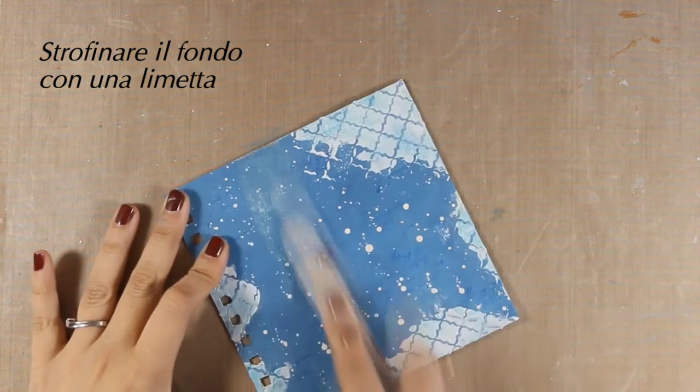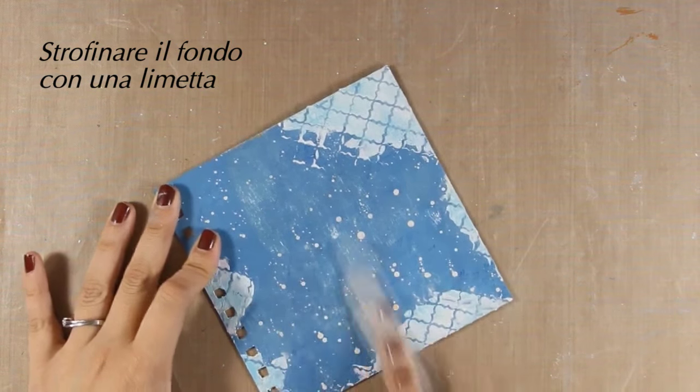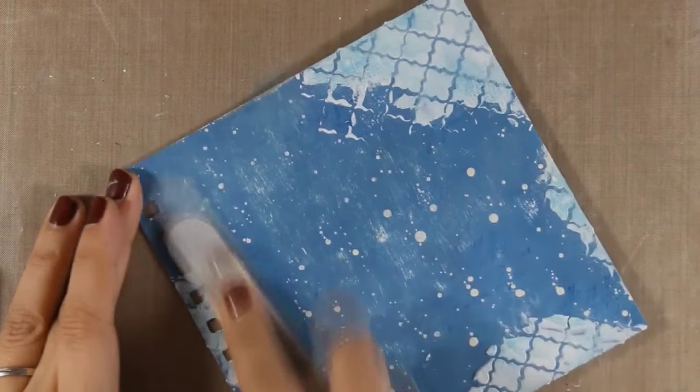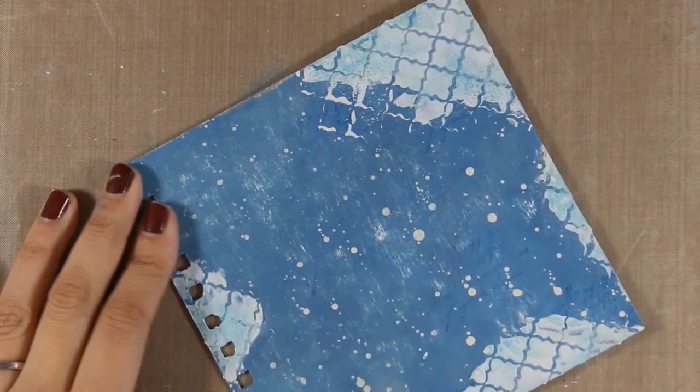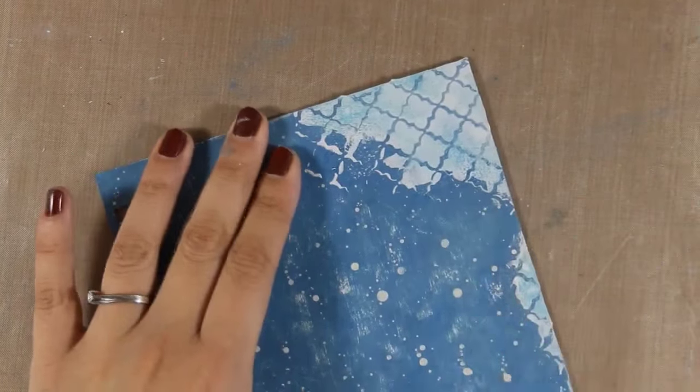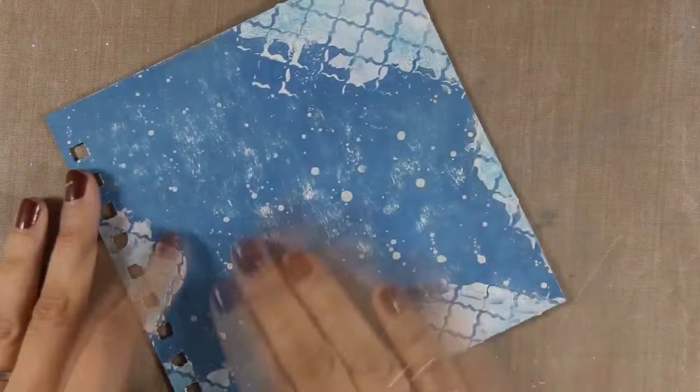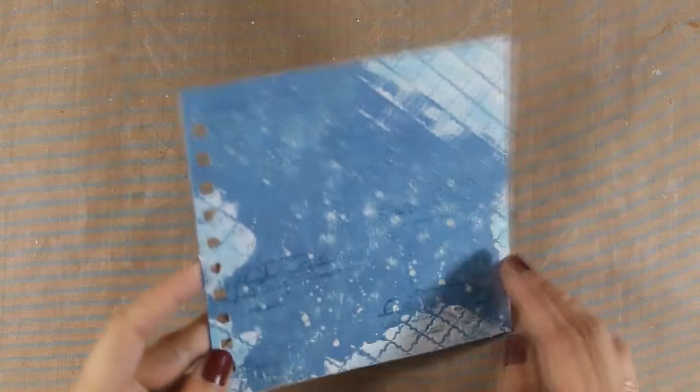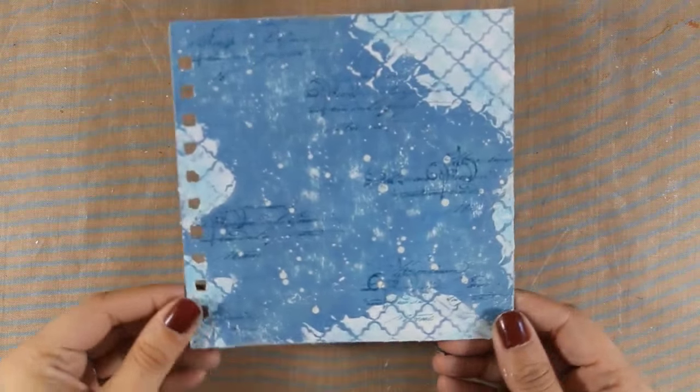I am also going to use a sanding file and I am going to make it even more distressed looking. Now this actually did erase the stamping of the text, so you will see that I will go ahead and stamp again on top, just to bring back all that interest on the background. So here it is, after stamping again the text.